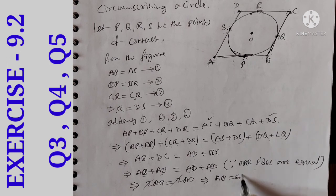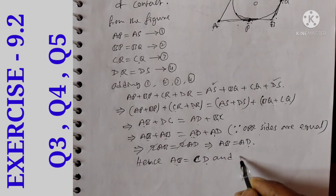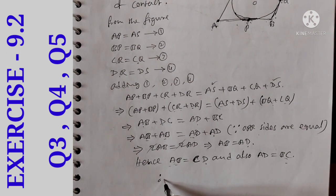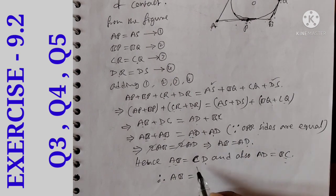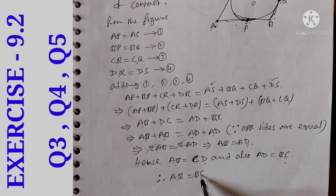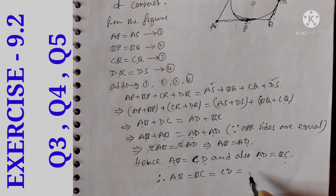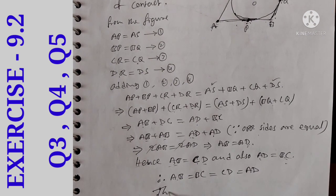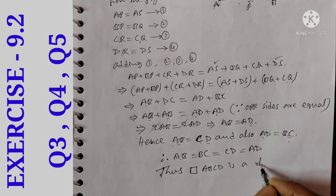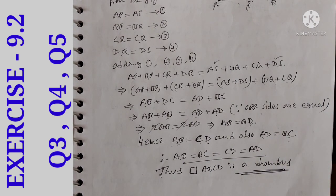Substituting: 2AB = 2AD, so AB = AD. Hence AB = BC = CD = AD, meaning all four sides are equal. Therefore the parallelogram ABCD is a rhombus.